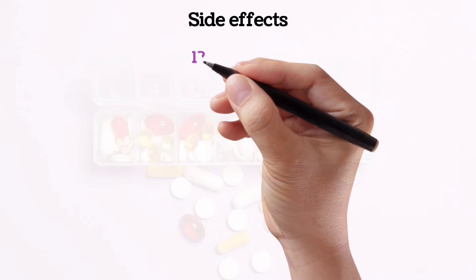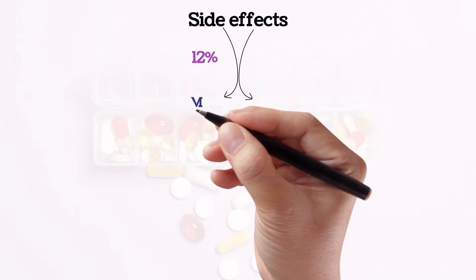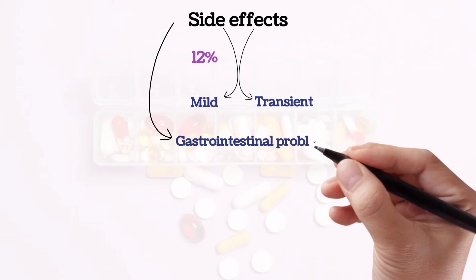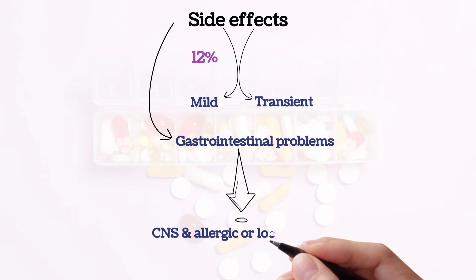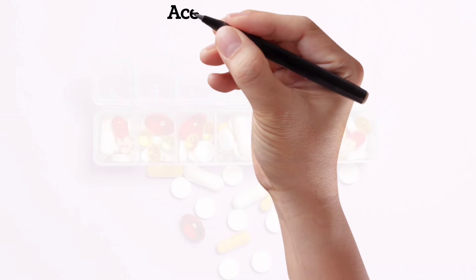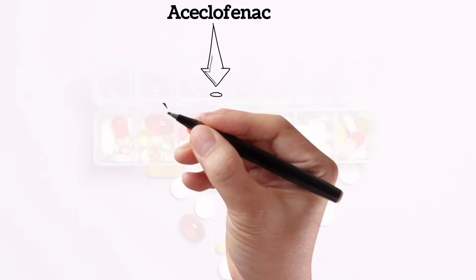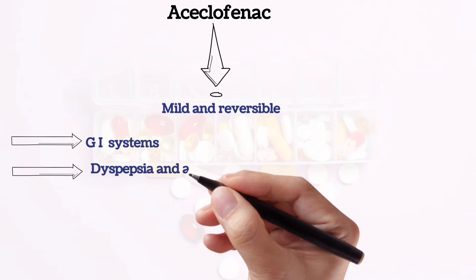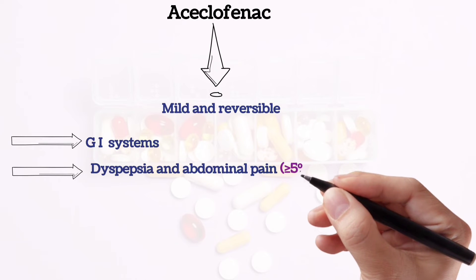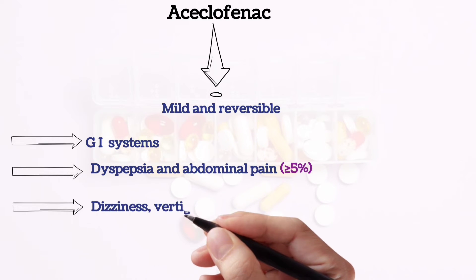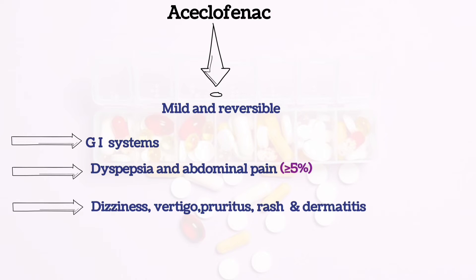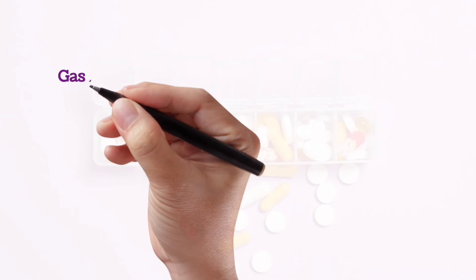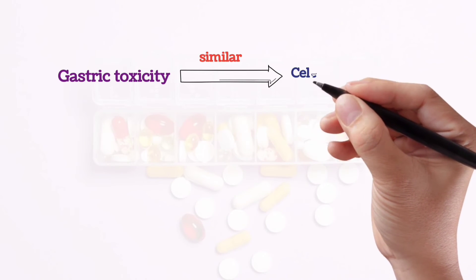Side effects: About 12% of patients experience side effects, which are usually mild and transient. Gastrointestinal problems are the most frequent effects, followed by minor central nervous system symptoms and allergic or local reactions. Adverse events reported with aceclofenac are mild and reversible and primarily involve the GI system. Most common events include dyspepsia and abdominal pain with greater than or equal to 5% incidence. Dizziness, vertigo, pruritus, rash, and dermatitis have been reported, but the incidence of these events is low, less than 5%. Some comparative trials have found its gastric toxicity somewhat similar to celecoxib and etoricoxib.